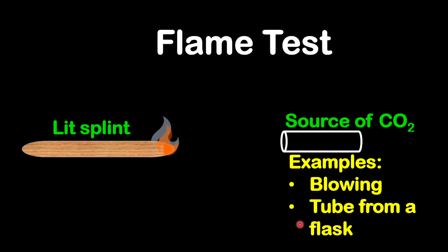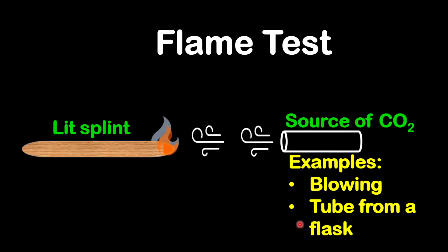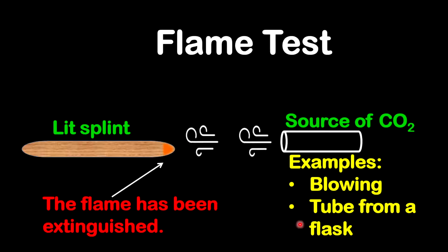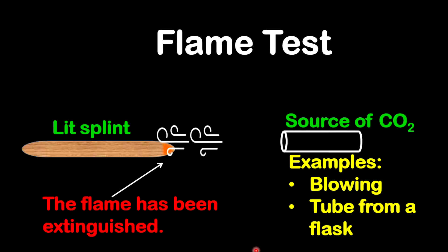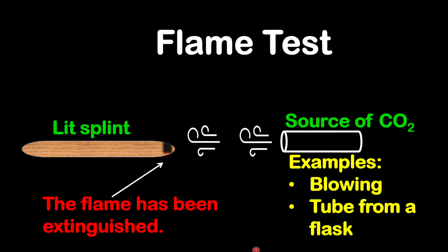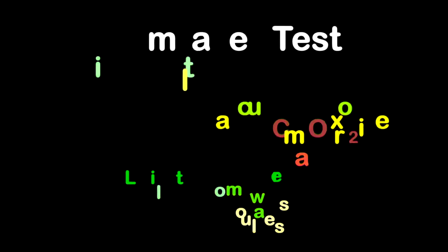Now what you'll want to do is to allow the gas to pass over the flame for a period of time. If the flame is extinguished or put out, then you can conclude carbon dioxide is present in that gas, because carbon dioxide will suppress burning or put out flame.